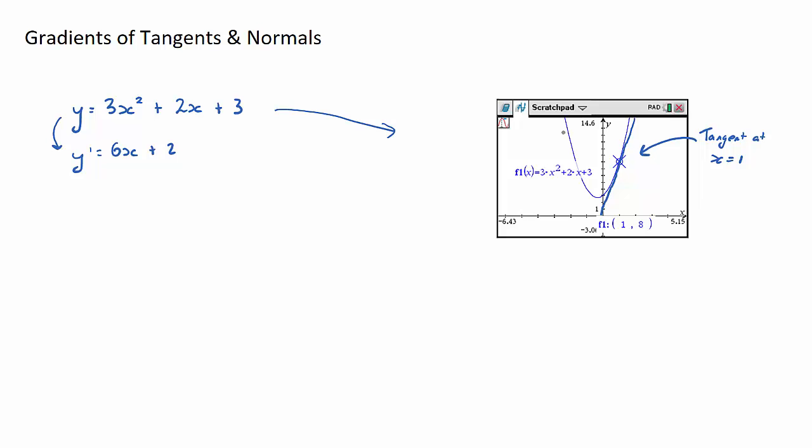You can see here I can draw tangents all over the place. I could draw a tangent here, I could draw a tangent here. This tangent here just happens to be the one at x equals 1.